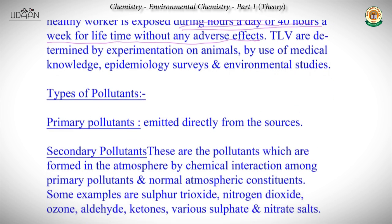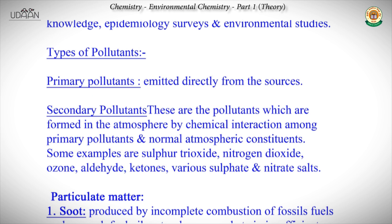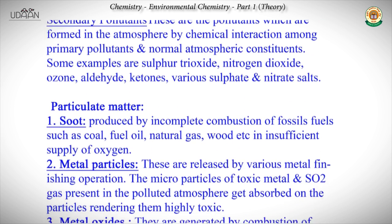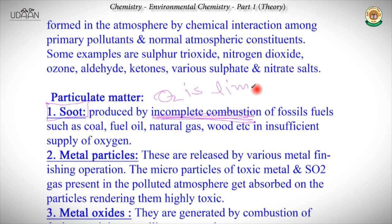Next we move on to types of particulate matter. Particulate matter refers to the particles present in air and has various types. First is soot, which is produced by incomplete combustion of fossil fuels — that is, combustion in a limited supply of O2. If O2 is limited, then the fossil fuels remain incompletely combusted. Examples of fossil fuels are coal, fuel gas, natural gas, wood, etc. Soot appears black in color.